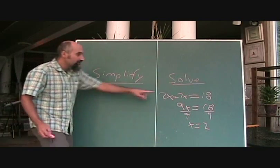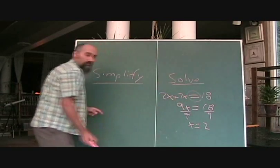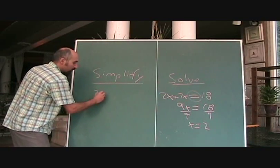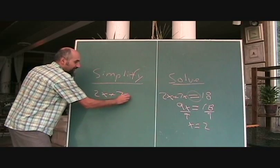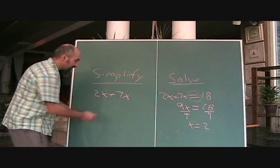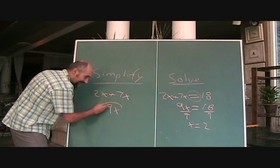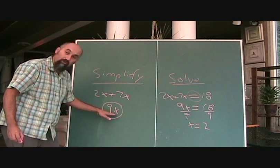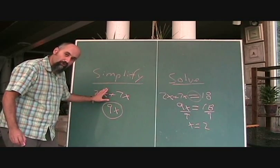With simplify, the question is going to be missing the equal sign. It's going to say 2x plus 7 and all they'll say is simplify. So 2x plus 7 is going to be 9x and that's your answer. There is no solution for x here. This is a general term.